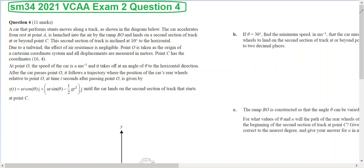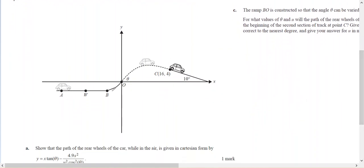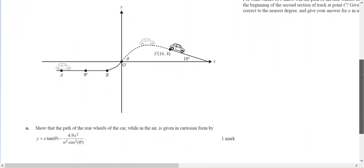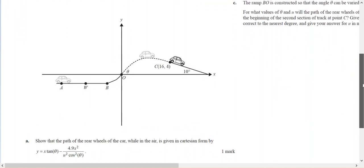So this is a projectile question. The projectile question involves the car which comes up this ramp and then has this particular trajectory. This is the position vector while it's in the air. And we have to show that the path of the rear wheels while it's in the air is given by that Cartesian form.